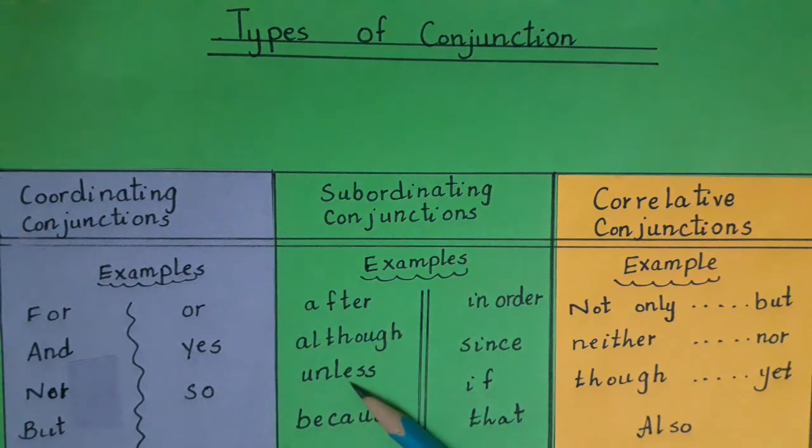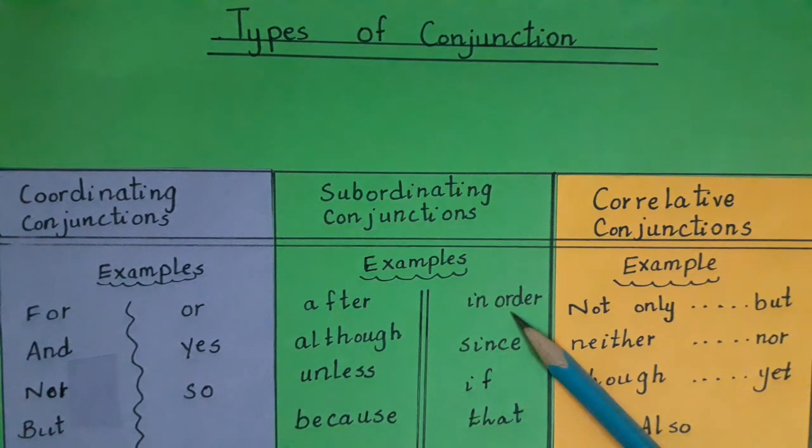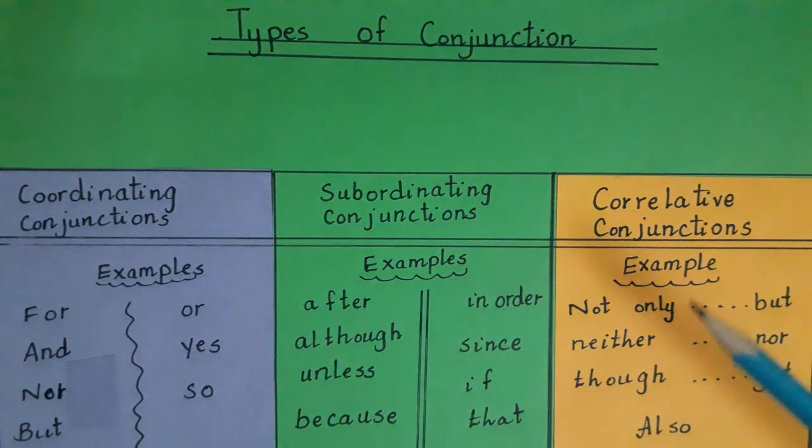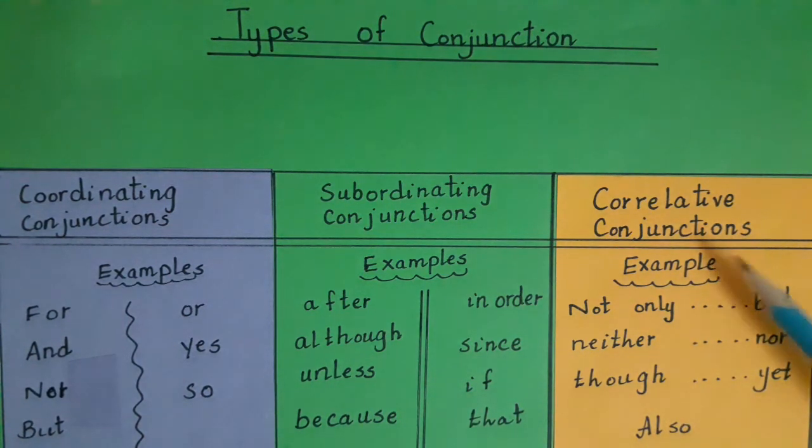And what are the examples of subordinating conjunction? After, although, unless, because, in order, since, if, and that. And what are the examples of correlative conjunctions? Not only but, neither nor, though yet, and also. These are the types of conjunctions.